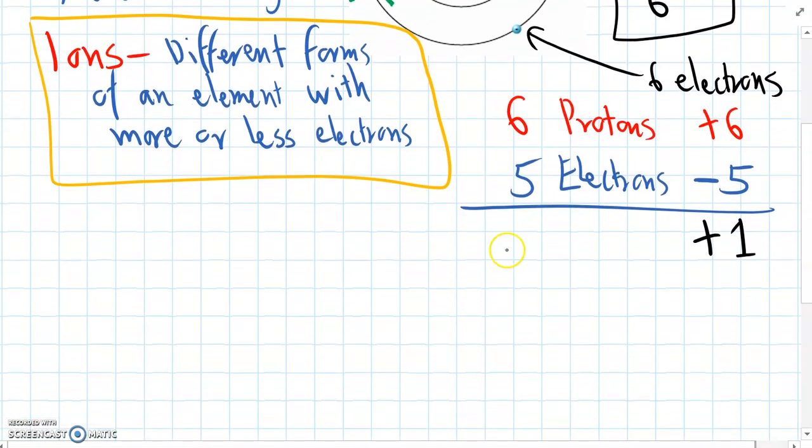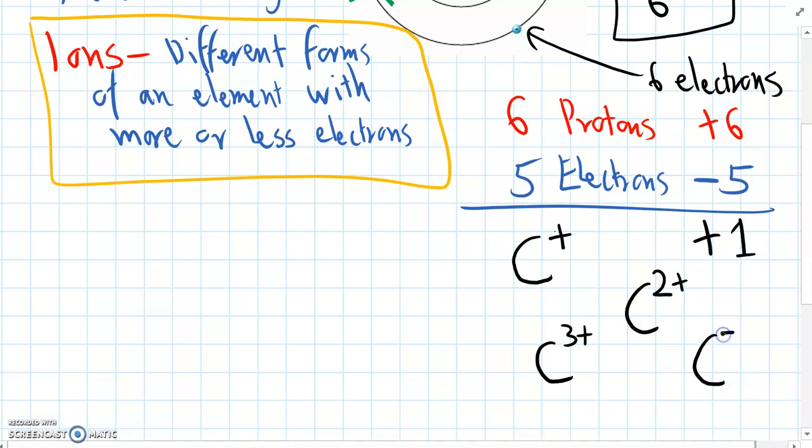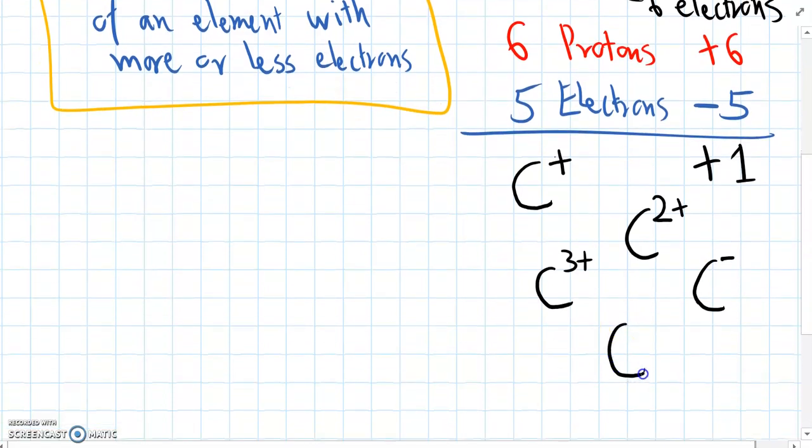And the way we write charge on an ion is with a little positive or a negative symbol at the top right. This is showing a positive one. If it was positive two, we'd write two plus, three plus, and if it was negative, we'd do a minus, two minus, and so on.